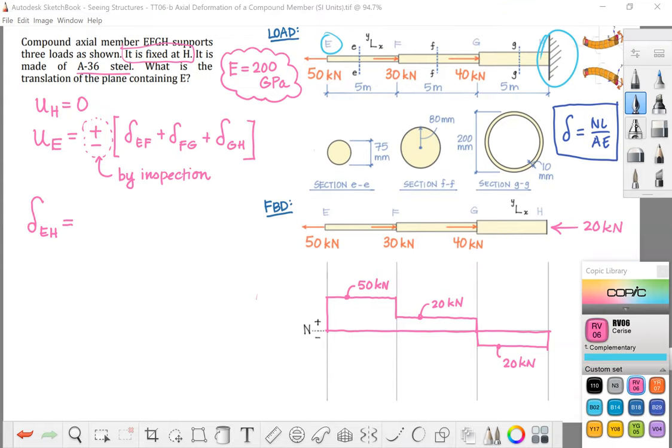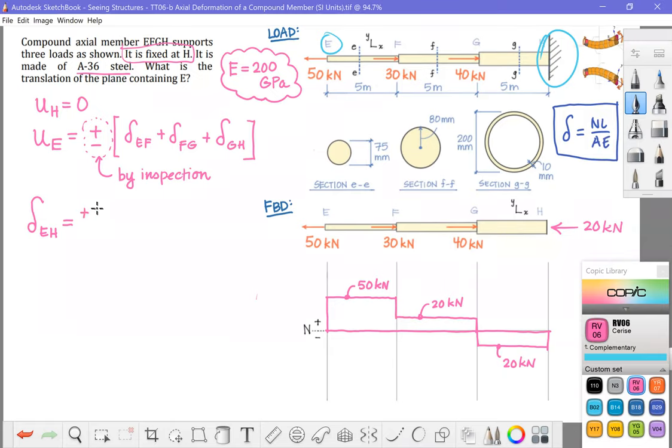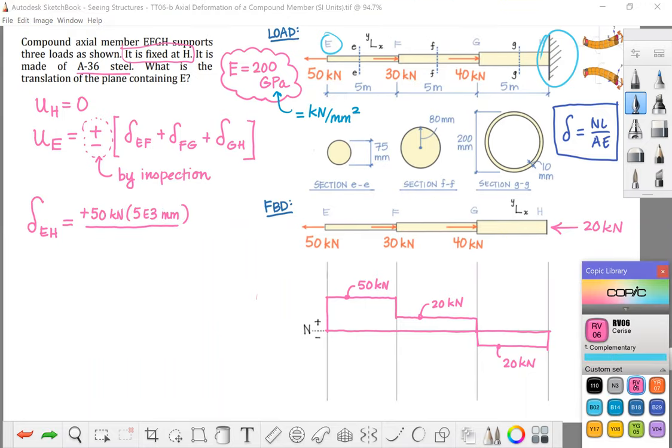For segment EF, the internal normal force is positive 50 kilonewtons. My length is given as 5 meters, but I'm thinking ahead. I'm going to go ahead and put that in millimeters because I know that a gigapascal is defined as a kilonewton per millimeter squared. So if I use kilonewtons and millimeters, those units will cancel out my gigapascals. So I'm just thinking ahead about my units as I go.